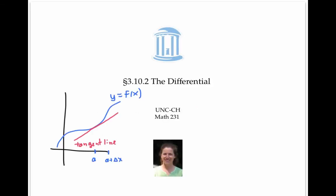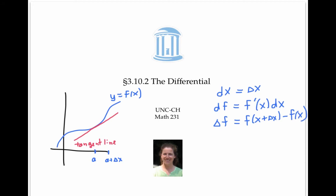This video introduced the idea of the differential. We said that dx is just another way of writing delta x, but df represents the rise in the tangent line and equals f prime of x times dx. Whereas delta f is the rise in the actual function f, equal to f of x plus delta x minus f of x. On the picture, dx is the run, df is the rise in the tangent line, and delta f is the rise in the actual function. In the language of differentials, we can restate the approximation principle to say that the change in f can be approximated by the differential.